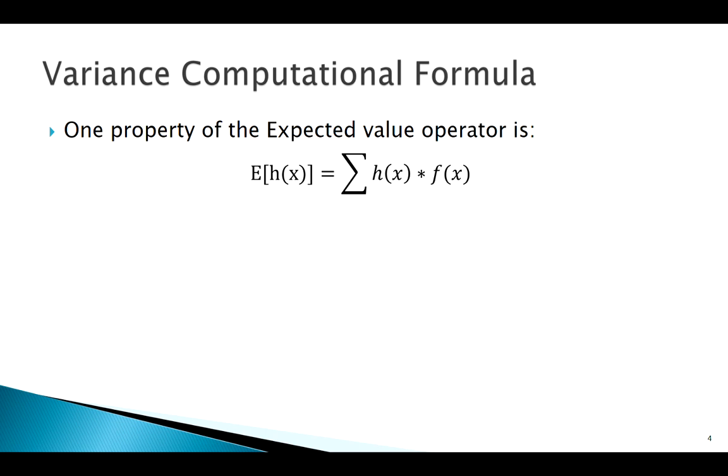A general property of the expected value is this: if we take the expected value of a function h(x), it's just the function weighted by its probability, sum them all up. Whatever's inside the brackets weighted by its probability, sum it all up—that's how we find the expected value of a function.